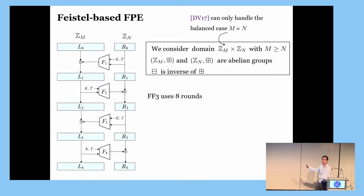So, here is a bird's eye view of FF3. It is just an 8-round Feistel network. The picture here shows 4-round Feistel. But, unlike conventional FF3 where the operator is XOR, here we consider a generic abelian group operator plus. Our attack works on a general domain Zm times Zn, where M is greater than N. And, in contrast, the DV attack only considers the balanced setting, namely M is equal to N.